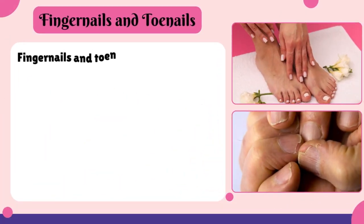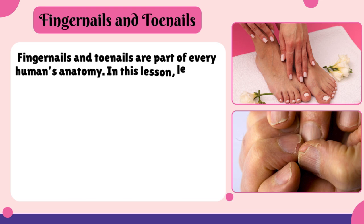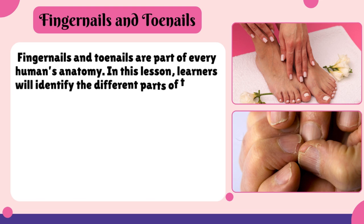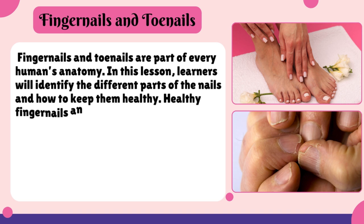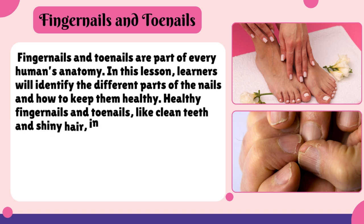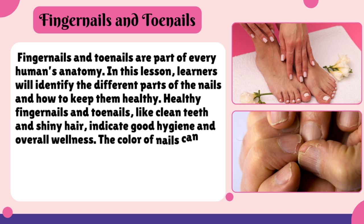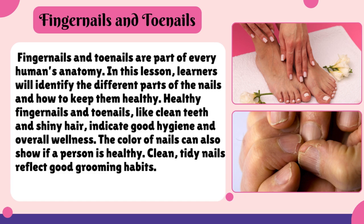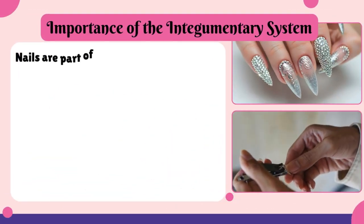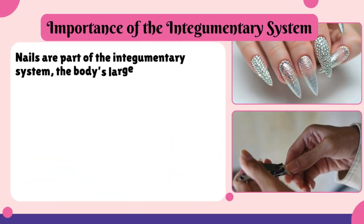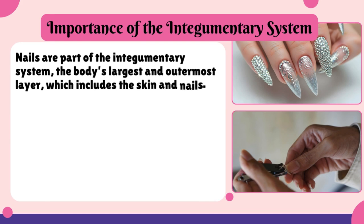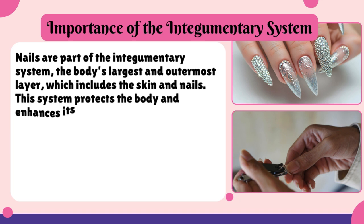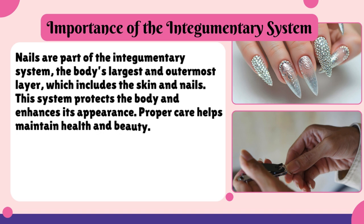Fingernails and toenails are a part of every human's anatomy. In this lesson, the learners will have an idea of the different parts of the nails and how to keep them healthy. Having healthy fingernails and toenails is just like having nice clean teeth and shiny hair. The color of the nails also serves as an indicator if a person is in good health or not. Having clean and tidy nails gives a person a good impression if he or she is practicing good grooming. Nails are part of the integumentary system, the body's largest and outermost layer, which encompasses the skin and nails. This system is crucial in protecting the body and enhancing its aesthetic appeal. Proper care of it is vital to maintaining both health and appearance.